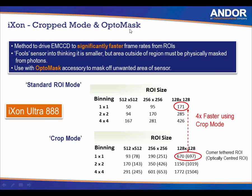To use crop mode, you need an OctoMask — an external accessory attached to the camera by a C-mount. Adjustable metal blades around the cropped region of interest ensure no light enters around the edges, preventing artifacts. A recently added optically centered crop mode allows the crop region to be centered in the middle of the sensor rather than in the bottom left-hand corner closest to the readout register. This gives speeds of 670 frames per second for the corner crop and 697 for the optically centered crop mode.